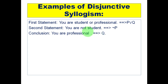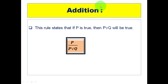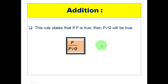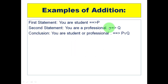Next is the addition rule. It states that if P is true, then P disjunction Q will be true. If P is true, then P disjunction Q is always true whatever the value of Q, because P disjunction Q is true when at least one of them is true. Since P is given true, P disjunction Q is always true. Example: 'You are a student' — P. Conclusion: 'You are a student or professional' — P disjunction Q.